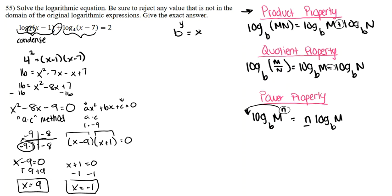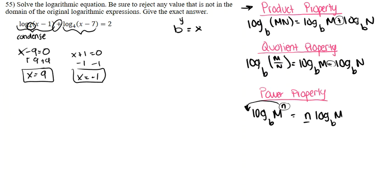To figure out which x values work, I'm going to take each of my x values and plug it back into our original logarithmic expression. When I plug in the 9 value first, you're going to get log base 4 of (x - 1) plus log base 4 of (x - 7) is equal to 2.